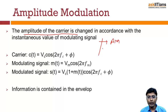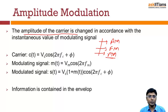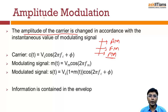Those three types are AM, FM, and PM. We have seen that when we change the amplitude it is amplitude modulation, if we change the frequency it is frequency modulation, and if we change the phase it is phase modulation. Right now we are studying amplitude modulation.